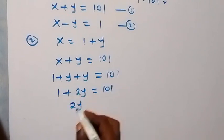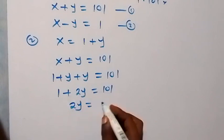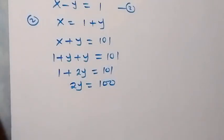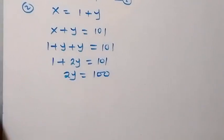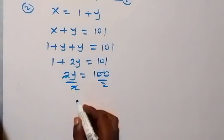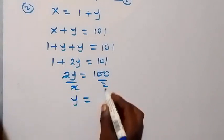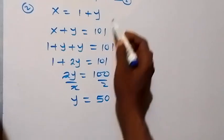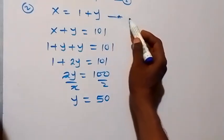Subtracting 1 gives 100. We can divide both sides by 2 to get y. So 2y = 100, and y = 100/2 = 50.